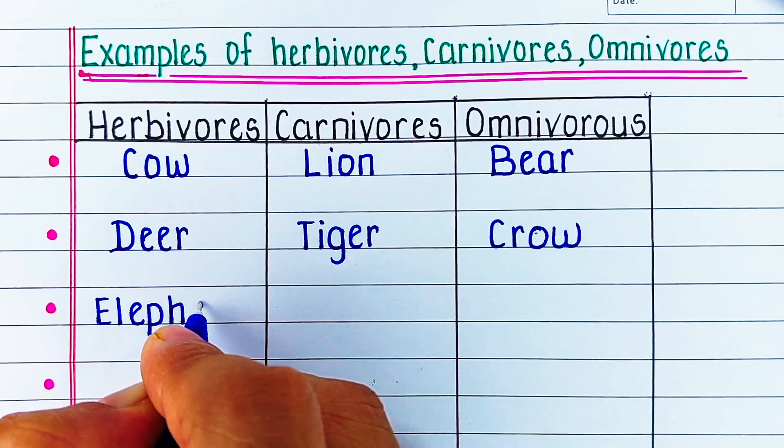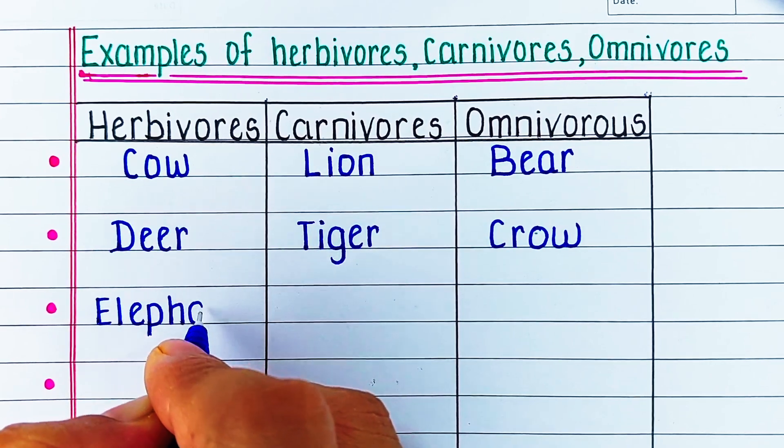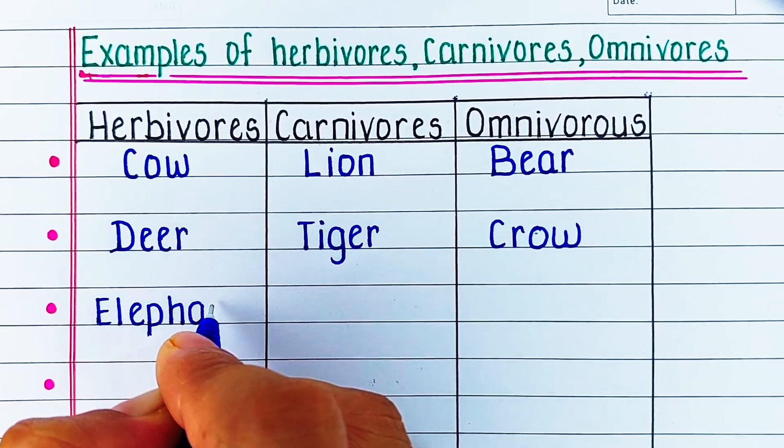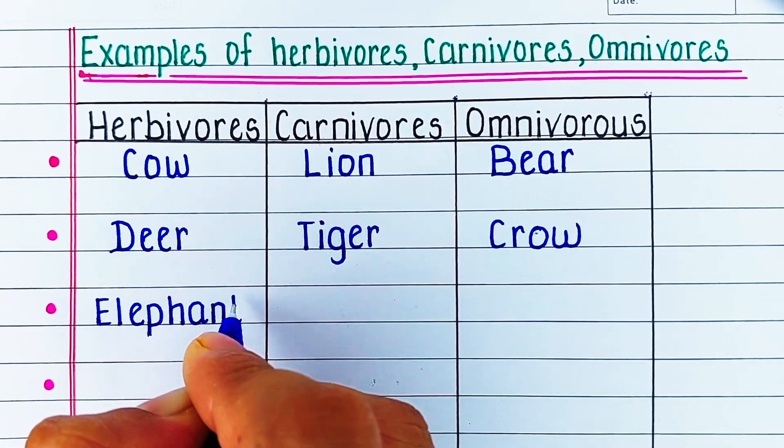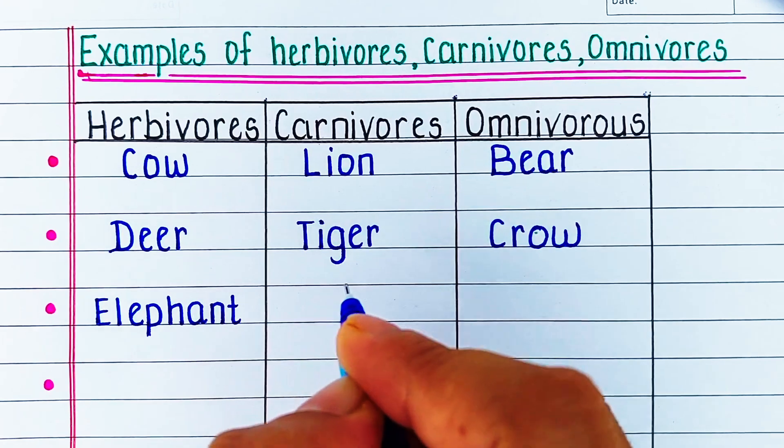Next herbivore is deer. Carnivore is tiger. And omnivore is crow.